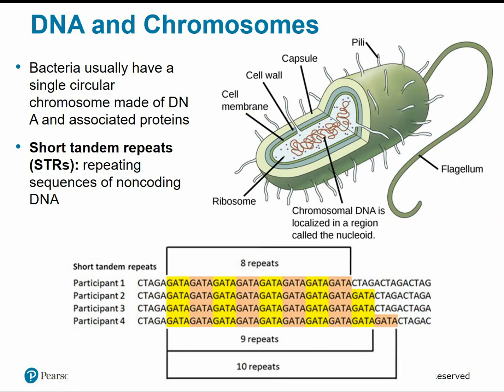Bacteria usually have a simpler single circular chromosome, still made of DNA and a few proteins. But remember, prokaryotes do not have a nucleus, so their DNA is just loosely floating in the cell in that nucleoid region. The DNA in chromosomes can consist of millions of base pairs, but it does not usually consist of back-to-back gene sequences. From what we know after studying the Human Genome Project, only about 2% of our genome has any function.